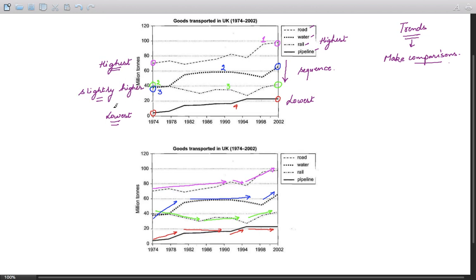Clearly, number one, which is road transport, is the highest in all the years. It carries the most goods, the highest number of goods in million tons. So the first trend is that this is the highest throughout the duration, throughout the given time period.